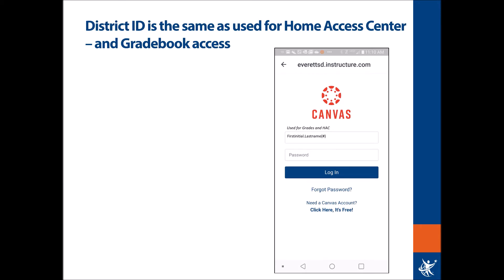Once you arrive at the login screen, you will type into the district ID your LMS parent username. Your parent username is the same you use to log into the Gradebook or the Home Access Center. It is typically your first initial, period, last name, and perhaps a number accompanying that. Your password will be the same as you use for the Gradebook and Home Access Center and website.